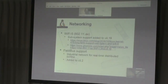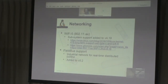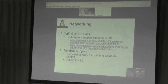In networking: Wi-Fi 6, 802.11ax support was added to the kernel in 4.19. And fieldbus support was added in 5.2 — fieldbus is an industrial network for real-time distributed control used in a lot of industrial automation. It's a fairly old protocol with lots of different flavors. Linux is increasingly being used in the industrial field.